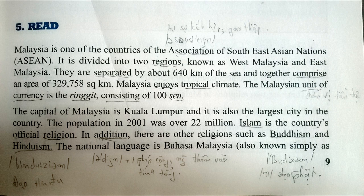Malaysia is one of the countries of the Association of Southeast Asian Nations, ASEAN. It is divided into two regions, known as West Malaysia and East Malaysia. They are separated by about 640 kilometers of the sea, and together comprise an area of 329,758 square kilometers.